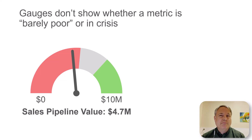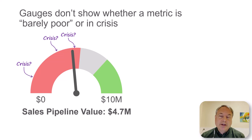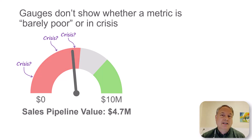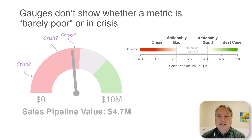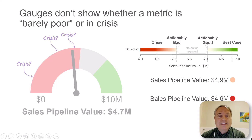Gauges also don't show whether a metric is in the barely poor range — where it's just below satisfactory — or whether it's in a crisis. For example, with sales pipeline value here I can see it's in the red, but if the crisis point is here, that means this is actually a crisis — it's a disaster. But what if the crisis point is somewhere else? I don't really know. Whereas with action dots I have a scale between crisis and actionably bad, so I can tell if something is just barely enough to require action or if it's a crisis — I can actually see the difference.